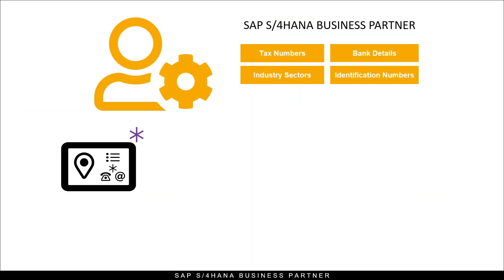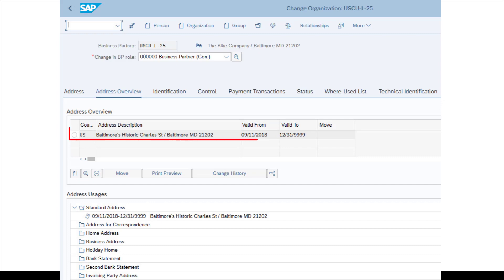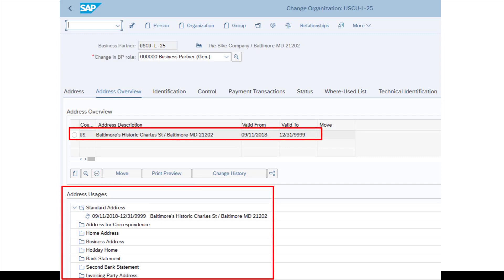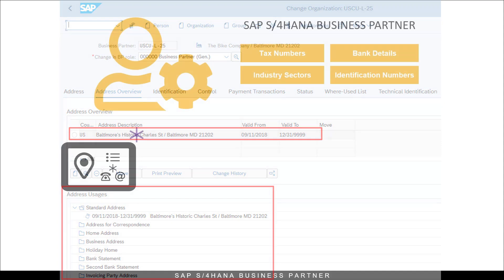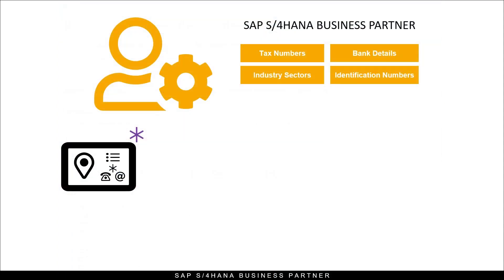Now let's have a look at S4HANA Business Partner. Multiple addresses are possible for a business partner, each with a defined usage, and each address includes validity dates. So if a supplier will be changing its street address two months from now, you can maintain that master data today with validity dates. Each address is a separate record in Business Address Services, and each Business Address Services record includes its own communications records such as multiple telephone numbers and email addresses.